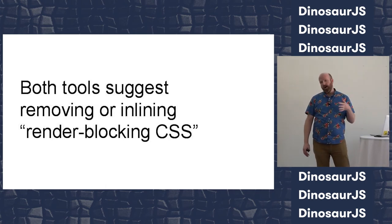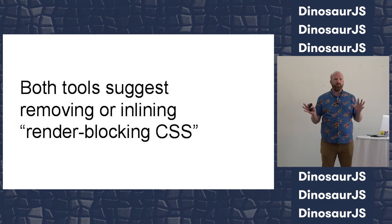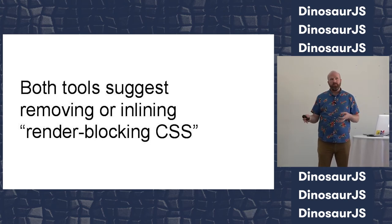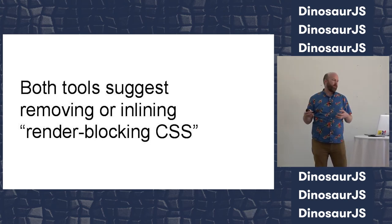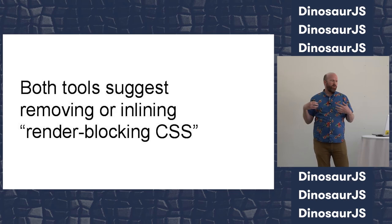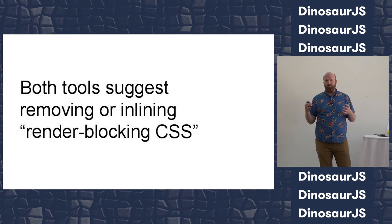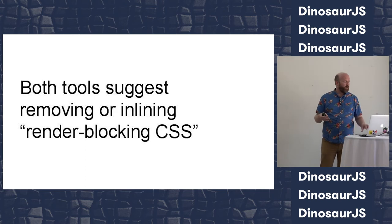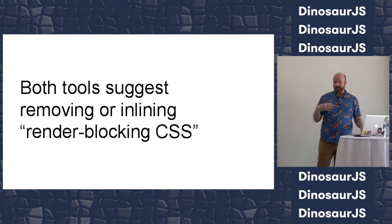Both tools report a bunch of things we could do, but they both also report this idea of removing or inlining render-blocking CSS. I picked that as a good example to do a performance experiment on. So now we've identified what we're going to try and optimize.